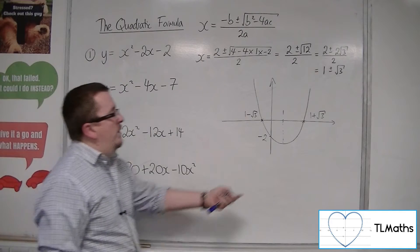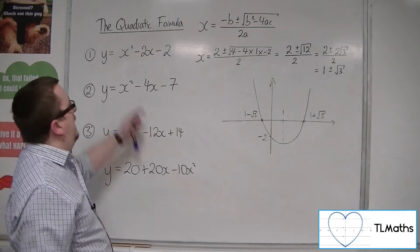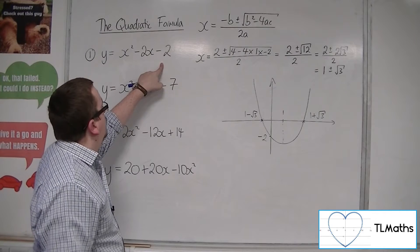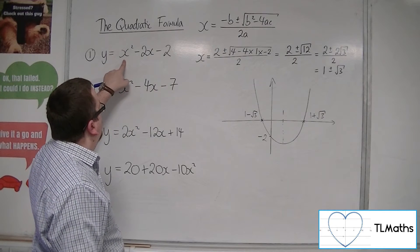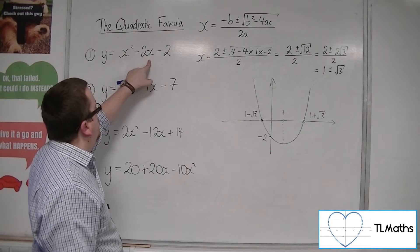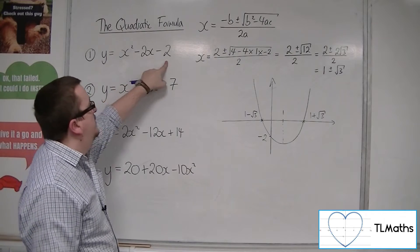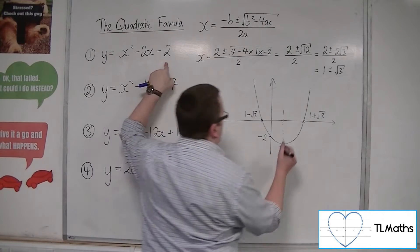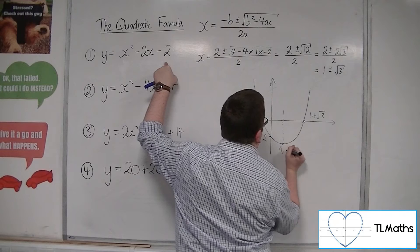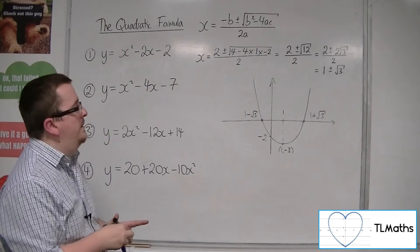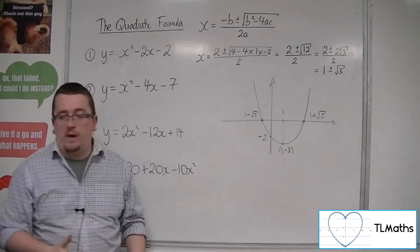Now you can always work out where the vertex is by now substituting 1 into this quadratic. So 1 squared, 1, take away 2. So 1 take away 2 is minus 1. Take away 2 is minus 3. So that point is 1 minus 3. And that is a sketch of this parabola.